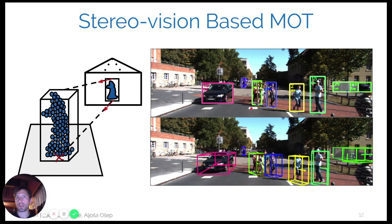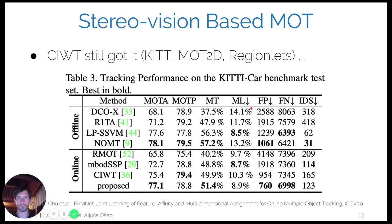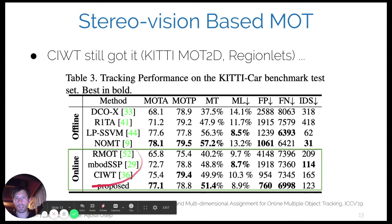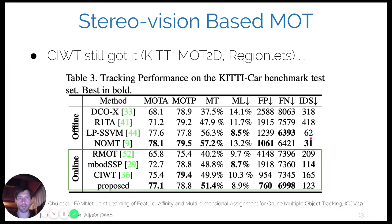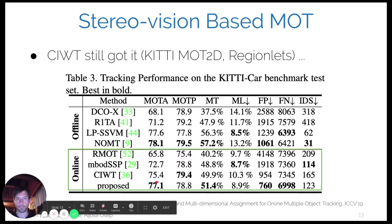This method was the first 3D multi-object tracking entry in the popular KITTI multi-object tracking benchmark, and 3D multi-object tracking is now a very popular and vibrant field. The method was state-of-the-art when published, and even four years later remains one of the top performers in the online setting when compared with methods using exactly the same inputs. A recent end-to-end multi-object tracking approach presented at ICCV reported this method as the second best performing method.